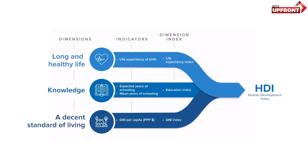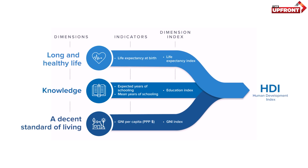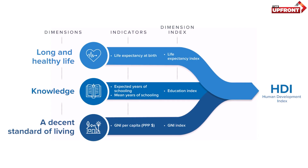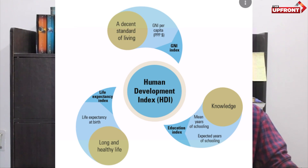There are three components that go into measuring the Human Development Index. The first is the knowledge standard of a country, the second is the health standard, and the third is the standard of living. To measure the knowledge standard, there are two indicators: the expected schooling of a child and the mean schooling of a child — that is, how many years a child is getting education and how many years he or she is expected to. If there is a discrepancy between these two numbers, the education is not up to the mark. To measure the health standard, we measure life expectancy at birth — how many approximate years a person is expected to live. The higher the life expectancy, the better the health.